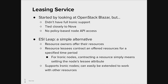Finally, the leasing service. We started by looking at OpenStack Blazar, which is OpenStack's reservation service. However, at the time we looked, Blazar did not have full support for provisioning on Ironic nodes. It was also tied closely to Nova, something we were trying to avoid, as Ironic can provision nodes on its own and we wanted as simple a service architecture as possible. Blazar also did not support policy-based node API access — you might be able to provision an Ironic node, but you couldn't allow a lessee to power cycle the node. So last summer, with the help of a bunch of Red Hat interns, some of whom are now full-time Red Hat engineers working on ESI, we developed ESI-Leap. It allows resource owners to offer their resources, and resource lessees to contract an offered resource for a specified time period. For Ironic nodes, contracting a node just means setting the node's lessee attribute. ESI-Leap supports the leasing of Ironic nodes but can easily be extended to work with other resources.